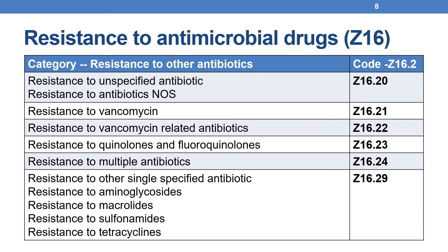Coming to the next category, Z16.2 is subcategorized into the following codes: resistance to unspecified antibiotic or antibiotic resistance NOS is indicated by Z16.20; resistance to vancomycin is indicated by Z16.21; resistance to vancomycin-related antibiotics is Z16.22; resistance to quinolones or fluoroquinolones is Z16.23; resistance to multiple antibiotics is Z16.24; and resistance to other single specified antibiotic — including aminoglycosides, macrolides, sulfonamides, or tetracyclines — is indicated by Z16.29.